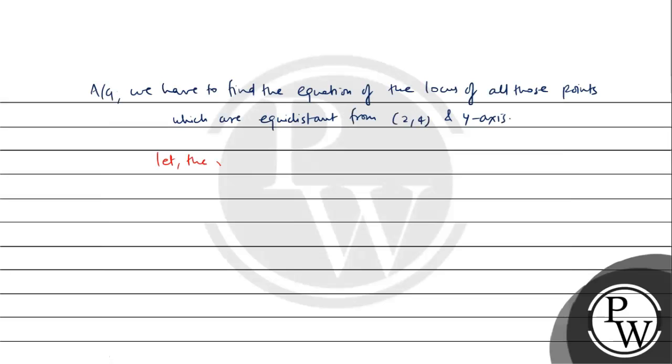So, let the required point be (x,y). Therefore, distance of point (x,y) from y-axis will be equal to distance of point (x,y) from (2,4).